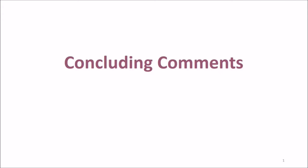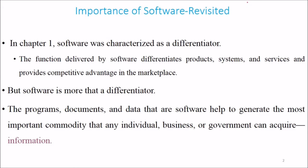Software Engineering by Pressman. Let us see the concluding comments in the book. What is the importance of software revisited? In chapter 1 or in the initial discussion, software was characterized as a differentiator — meaning the function delivered by software differentiates products, systems, and services and provides competitive advantage in the markets.